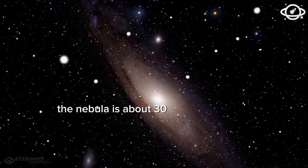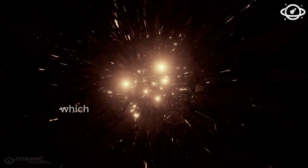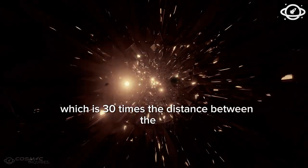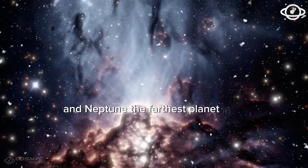The nebula is about 30 astronomical units wide, which is 30 times the distance between the sun and Neptune, the farthest planet in our solar system.